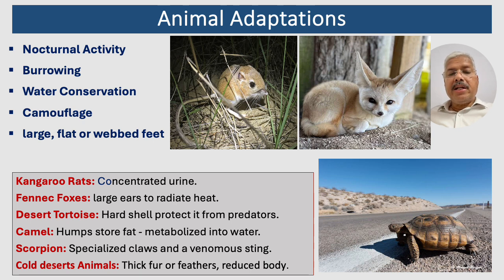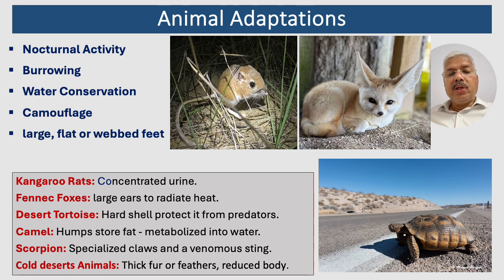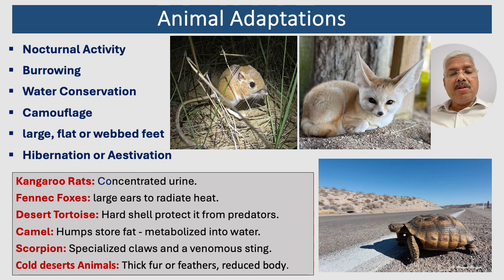Some animals can enter a state of dormancy, such as hibernation during winter or estivation during the hottest months. Examples of desert animals include kangaroo rats, fennec foxes, camels, desert tortoises, scorpions, and others.